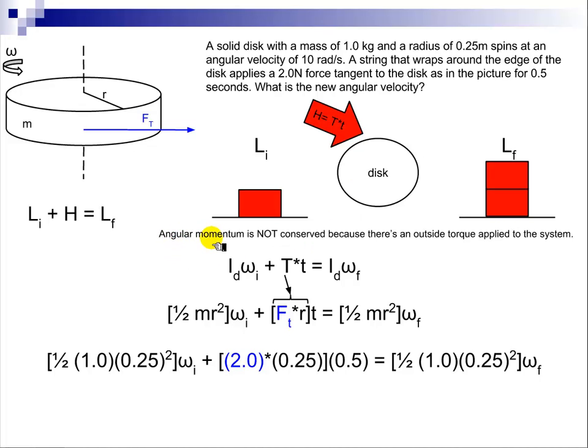So this angular momentum is not conserved because there's an outside torque applied to the system. So this angular momentum, when we add it to the angular impulse, gives us our new final angular momentum.